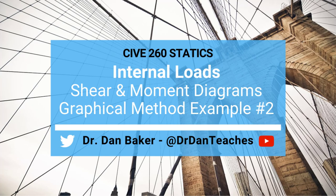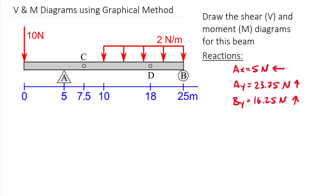Hello students of statics, this is Dr. Dan Baker. Today's example we are going to revisit an example we worked back when we were solving for shear and moment at distinct locations. You may remember this beam — we solved for shear and moment at C, and set up free body diagrams to solve for shear, moment, and axial load at D. Instead of focusing on just those two points, today we are going to draw the shear and moment diagrams for the entire beam using the graphical method. This is the problem statement drawing — it is not yet a free body diagram.